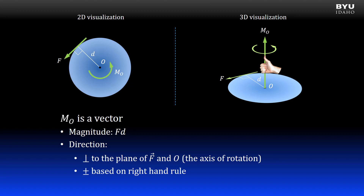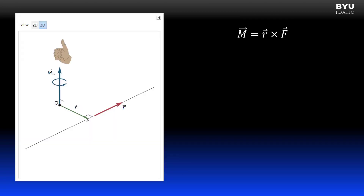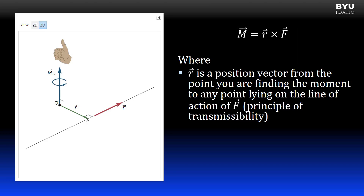In this example, the vector is positive. Since the moment is a vector, we can write it in vector notation like this: vector M is equal to vector R cross vector F, where vector R is a position vector from the point you are finding the moment to any point lying on the line of action of force F.